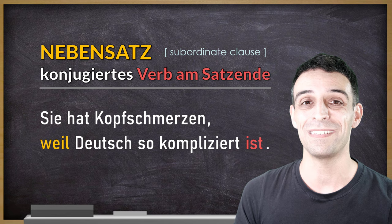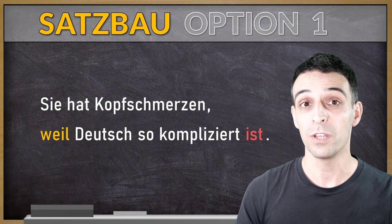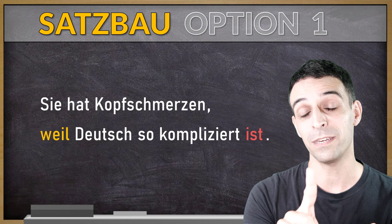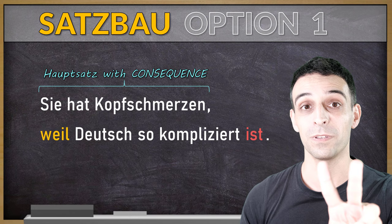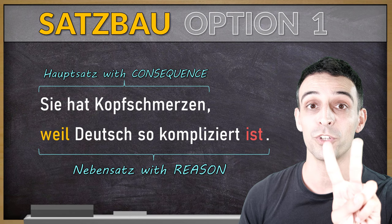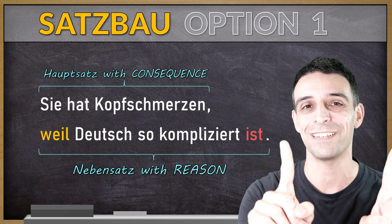Let's wrap it up. This is option number one: the first part of your sentence is a main clause with the consequence. The second part is a subordinate clause that starts with the conjunction 'weil' in position one, and right at the end — last position — there is the conjugated verb.